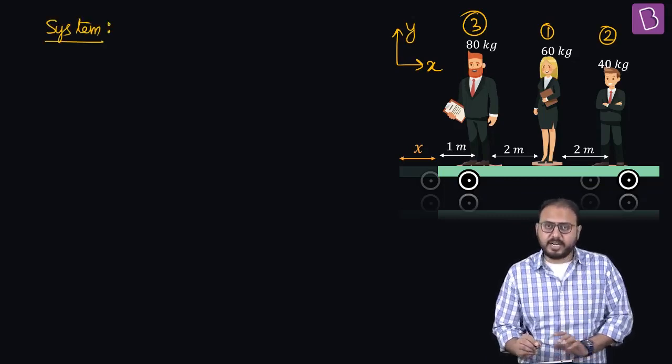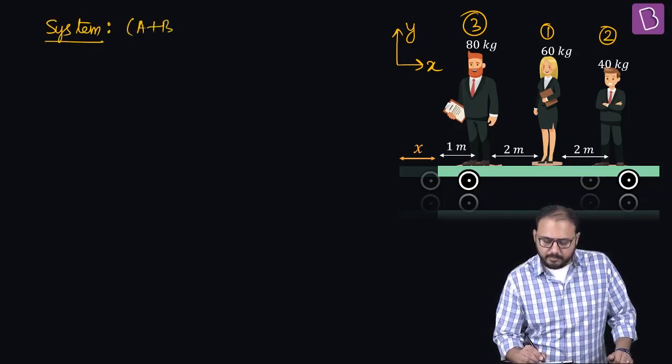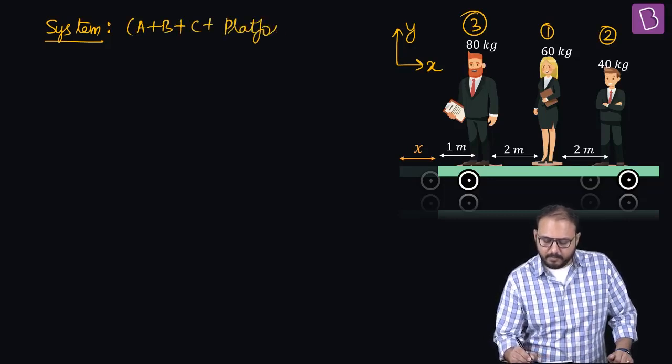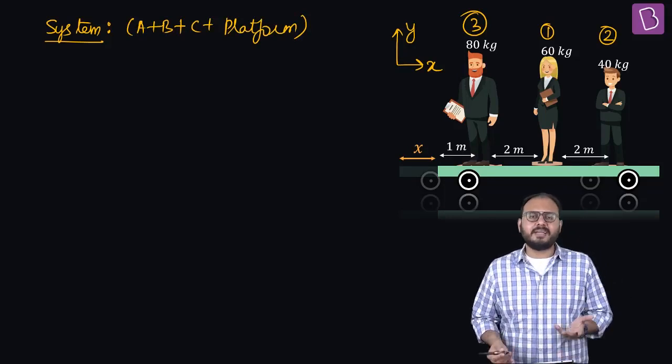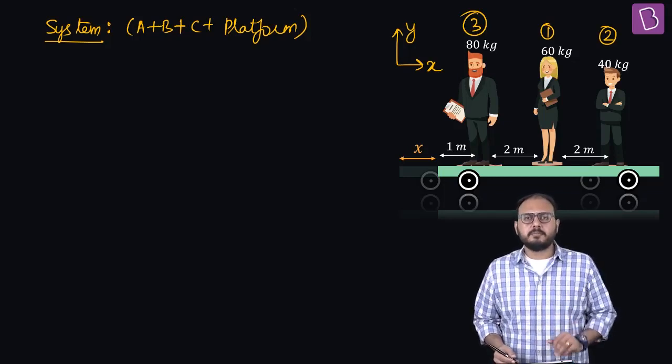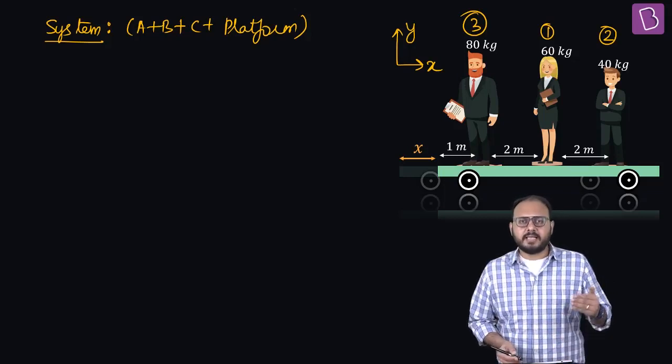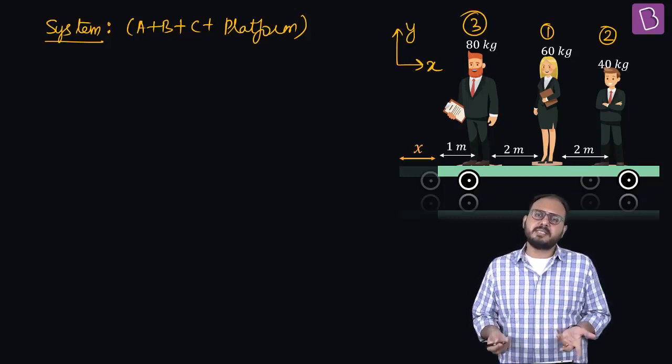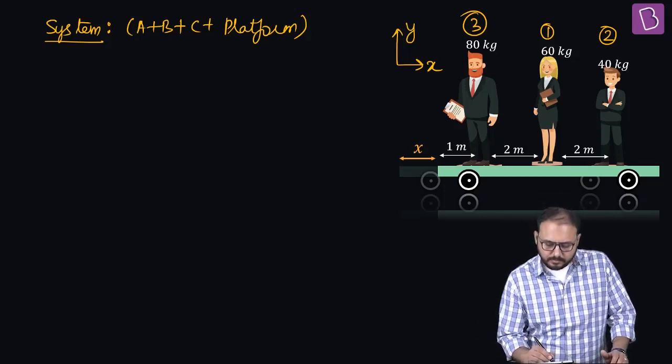System - I will not add everything now. System A plus B plus C. How did you know platform will go right? I don't know. Assume left, your answer will tell you. Sigma F external system is equal to zero.